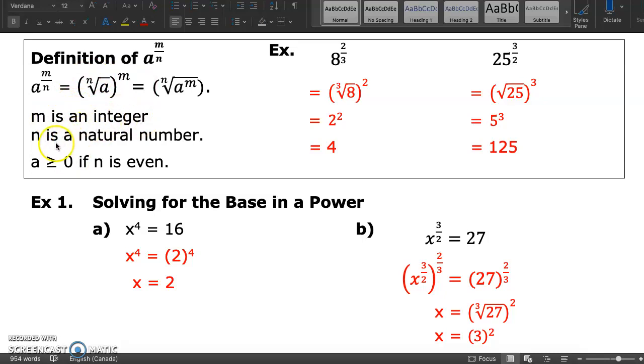M is an integer. N is a natural number. And A is a positive number if n is even.